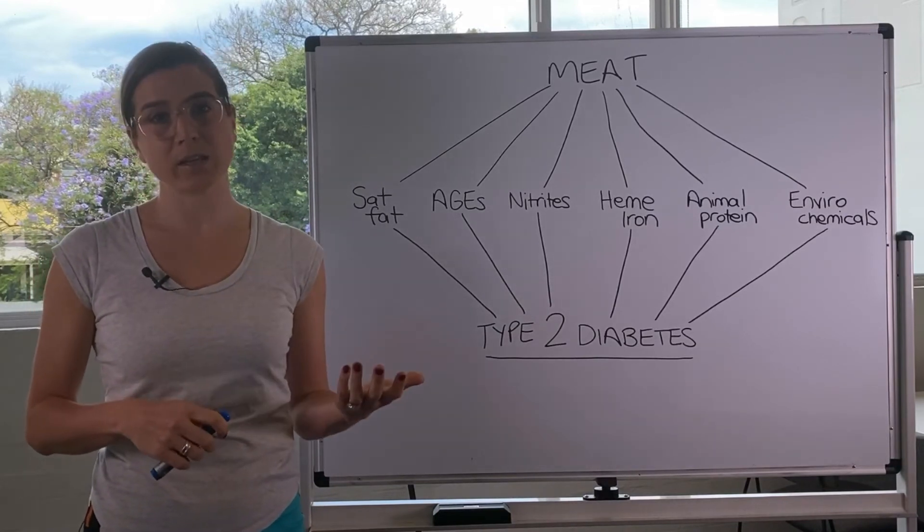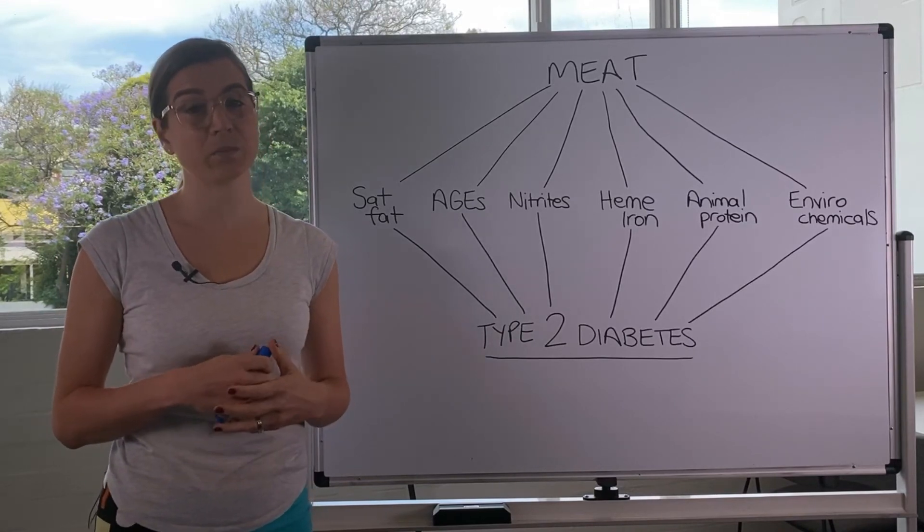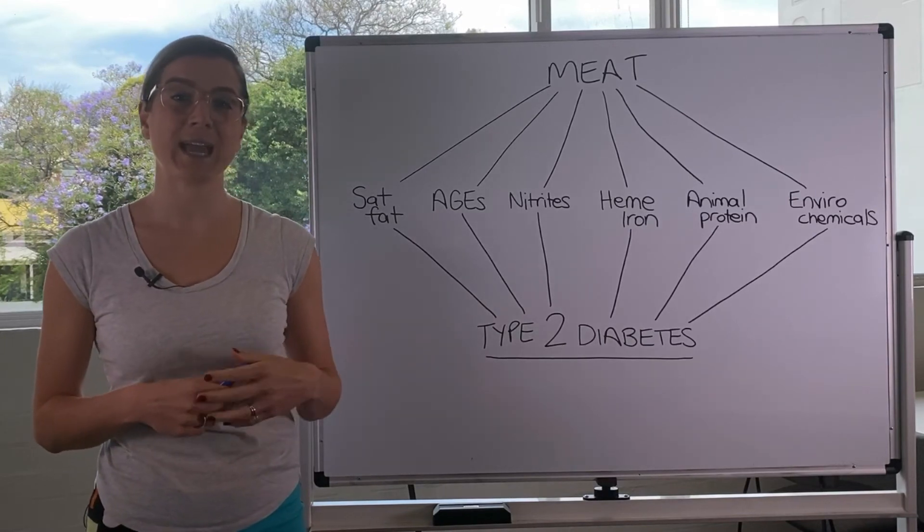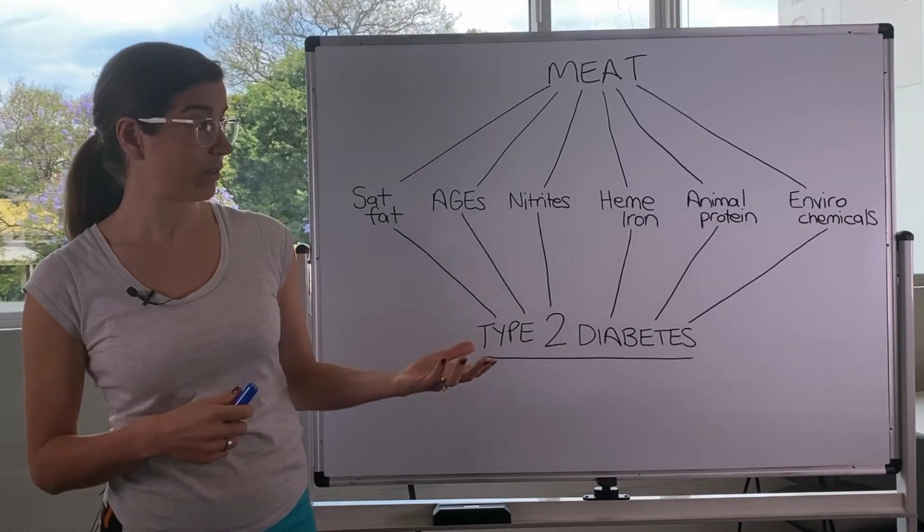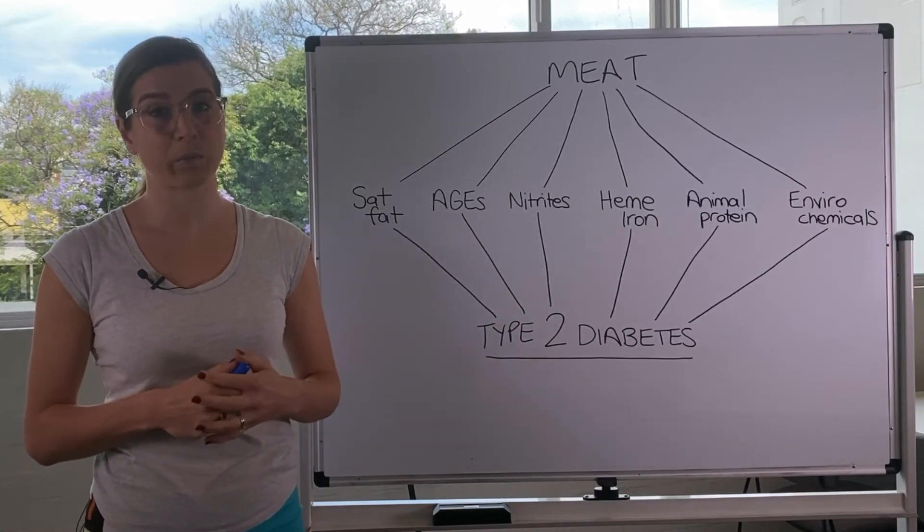And there are many other types of phytonutrients in different plant-based proteins and plant sources that can really help. They're very health promoting and they reduce inflammation and encourage the insulin to work properly in the body.